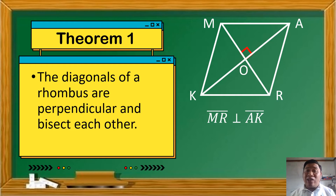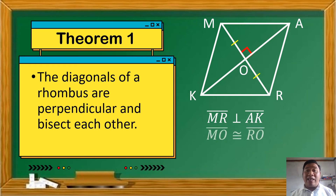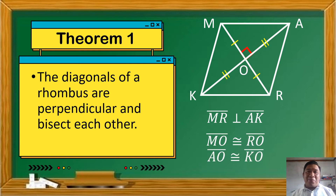Pag sinabing perpendicular, nag-intersect at naka-form ng right angle — kaya yung mga ibang angles dyan na nabuo din, they are all right angle. Sabi rin sa theorem na ito that the diagonals bisect each other — hinahati nila yung isa't isa into two congruent segments. Kaya sa diagonal M-R, we have segment M-O which is congruent to segment R-O. Ganun din naman yung kay diagonal A-K — we have segment A-O is congruent to segment K-O.